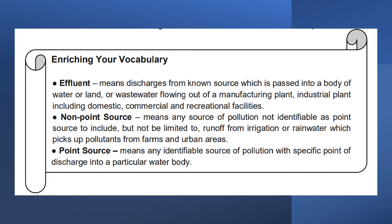Before we start our discussion, let us first familiarize ourselves with the different terminologies used in this module. Effluent means discharges from a known source passed into a body of water or land, or wastewater flowing out of a manufacturing plant, industrial plant, including domestic, commercial, and recreational facilities. Non-point source means any source of pollution not identifiable as a point source, including runoff from irrigation or rainwater which picks up pollutants from farms and urban areas. Point source means any identifiable source of pollution with a specific point of discharge into a particular water body.